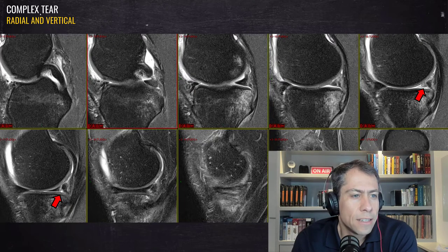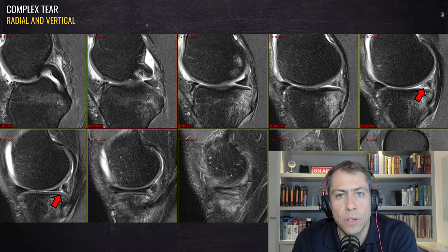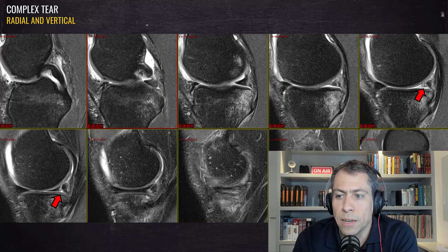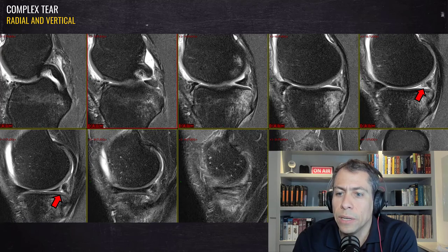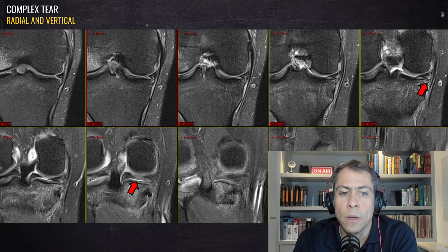In this first case, this is a complex tear of the posterior horn of the medial meniscus with two components: a radial partial tear and a vertical longitudinal tear. We can see the partial radial tear — the partial cleft sign — right here in the short axis of the meniscus, and we can also identify the vertical longitudinal tear in this region on the sagittal plane.